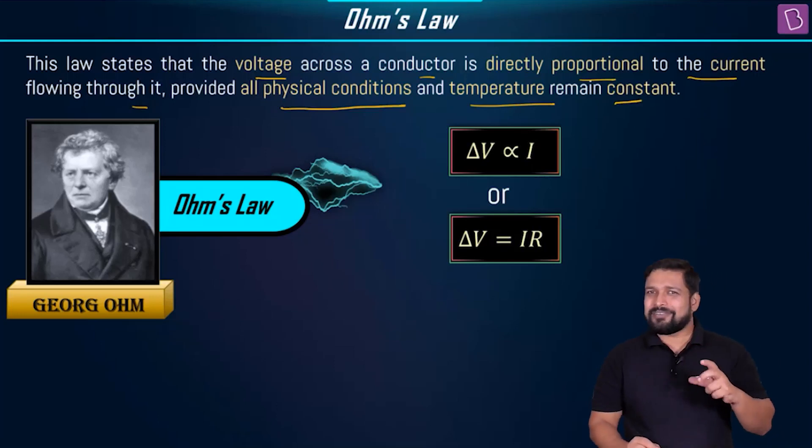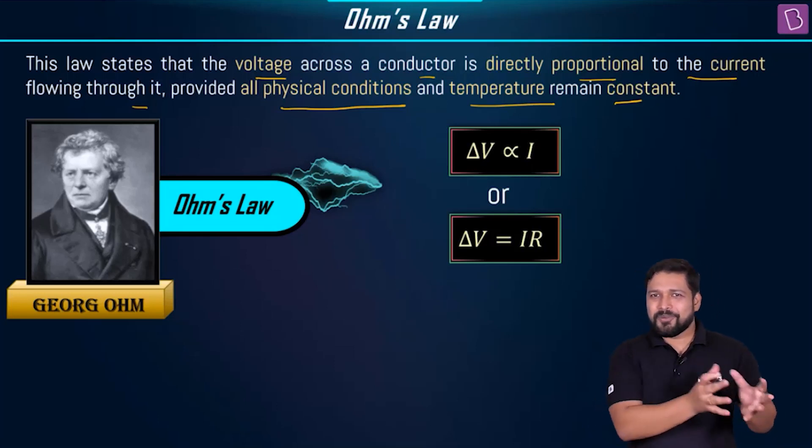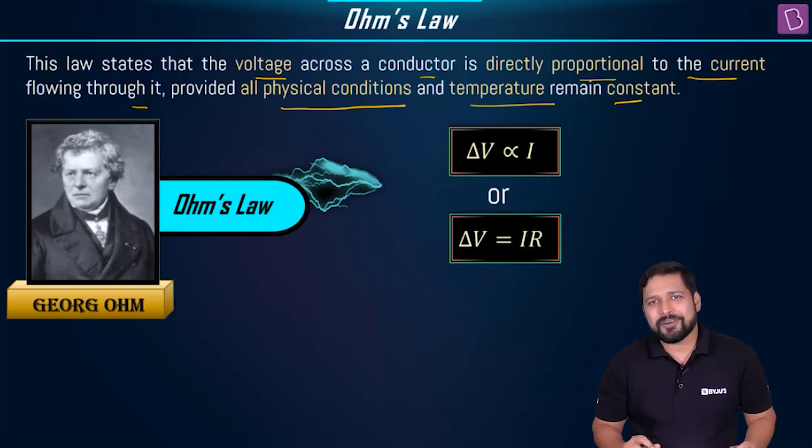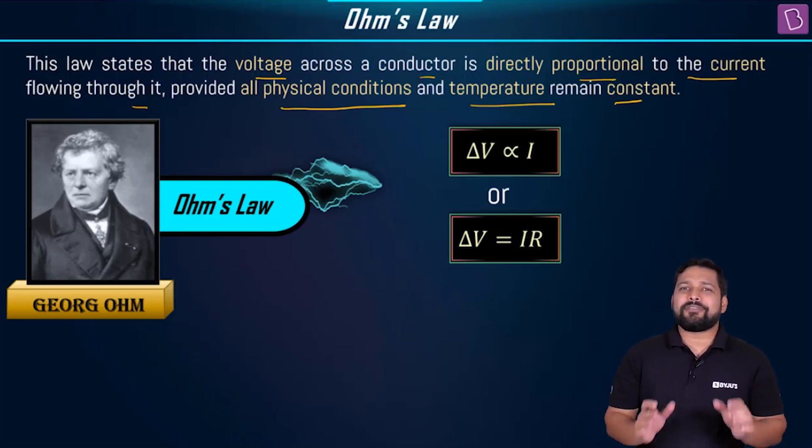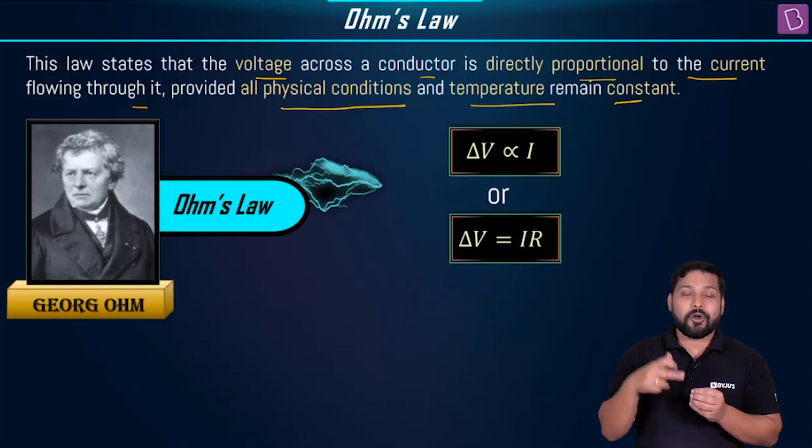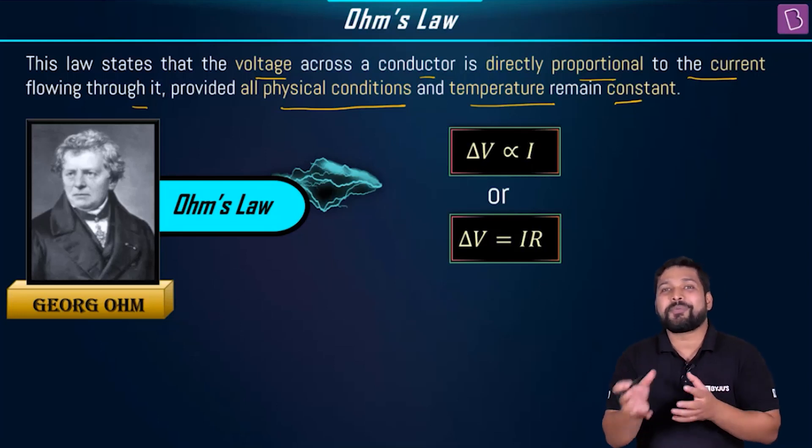I told you that the moment you change this physical condition, then things are going to change a little bit. Then that entire thing that we had got, the term that we had got and we had assumed it to be a constant, that does not remain constant. If you change the length, it does not remain constant. If you change the area, it does not remain constant. Given that all the physical conditions are same, the temperature is same, because if you change the temperature, it affects the amount of collision, or it affects the time taken between two successive collisions, or in other words, what happens is the value of the relaxation time gets reduced, because now the collisions are happening quite frequently.